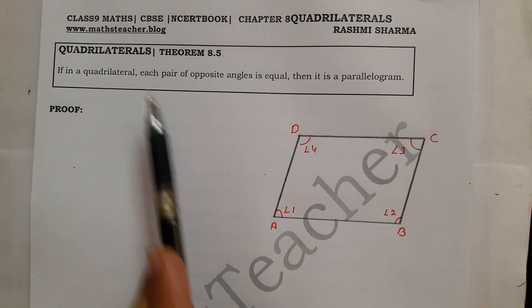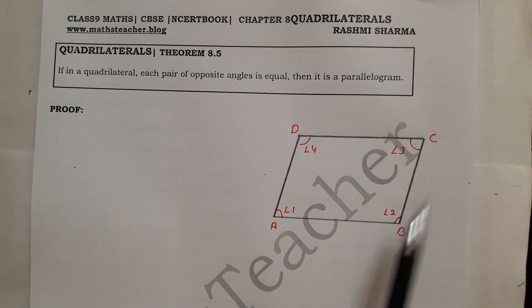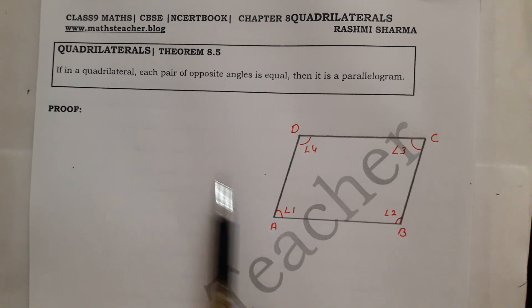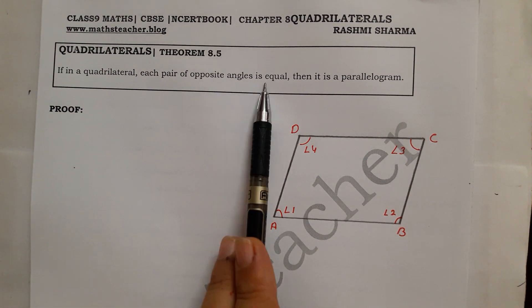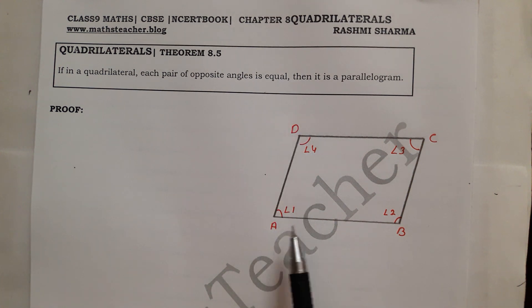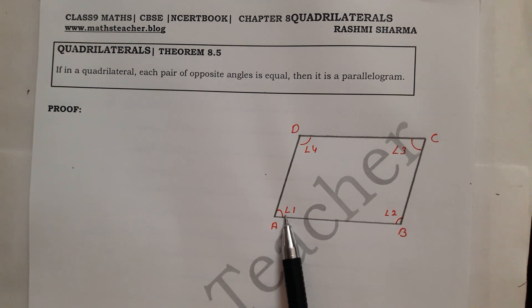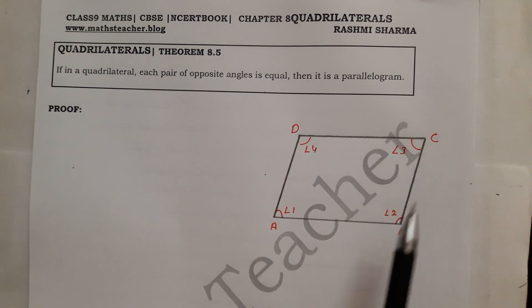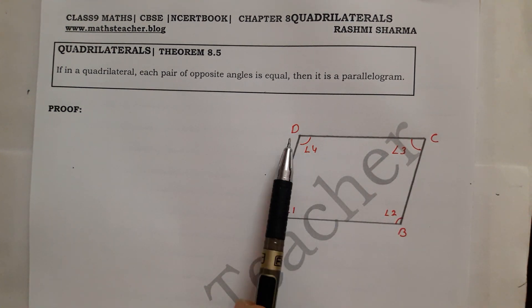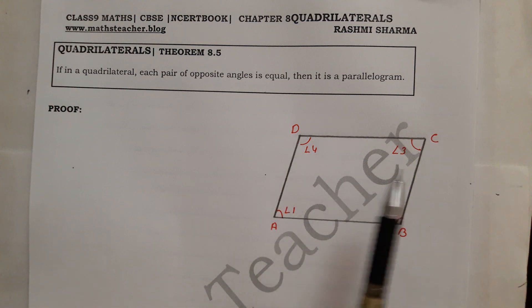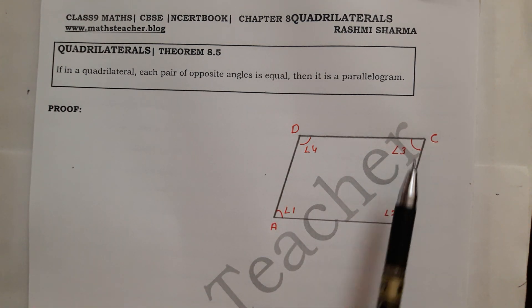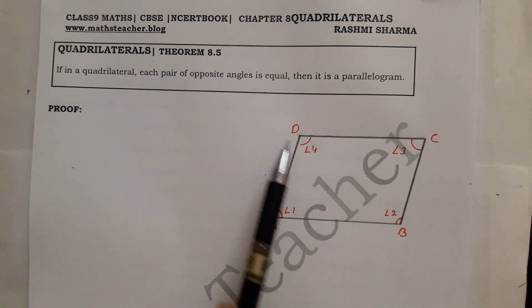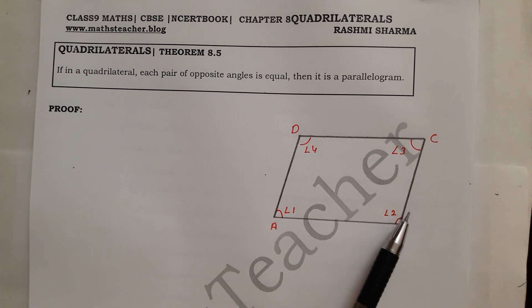The theorem states: if in a quadrilateral ABCD each pair of opposite angles is equal — that is Angle 1 is opposite Angle 3, and Angle 2 is opposite Angle 4 — and both pairs of opposite angles are equal to each other, then it is a parallelogram. This equality of opposite angles is what is given.